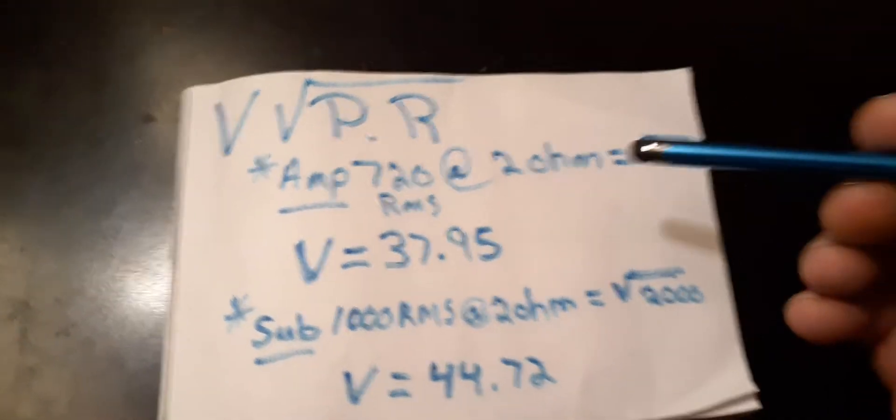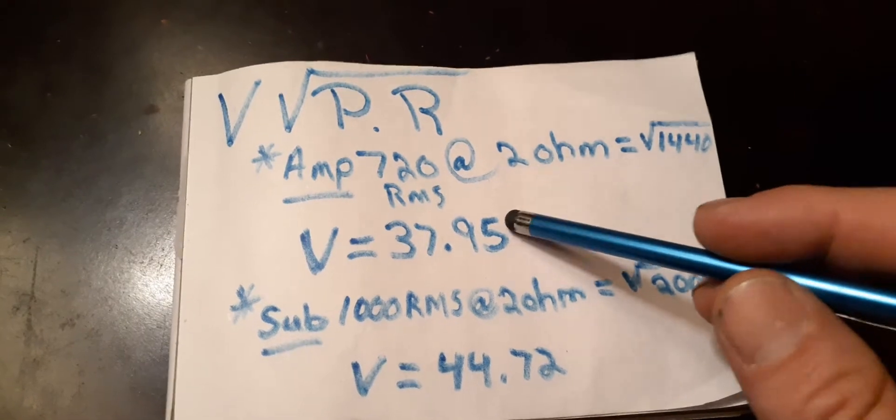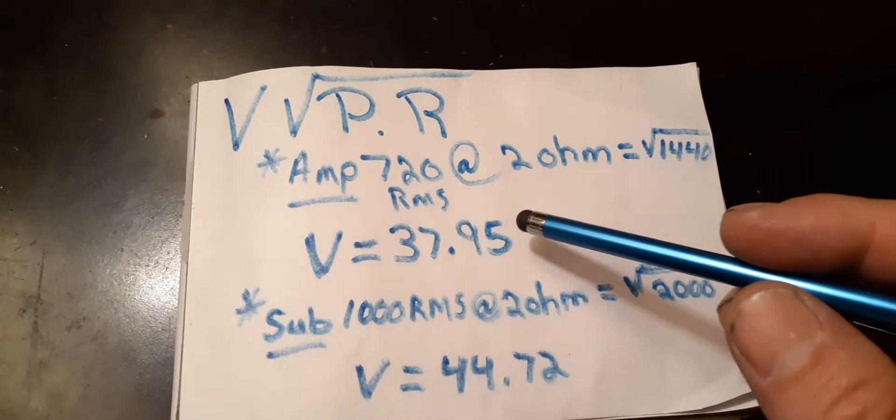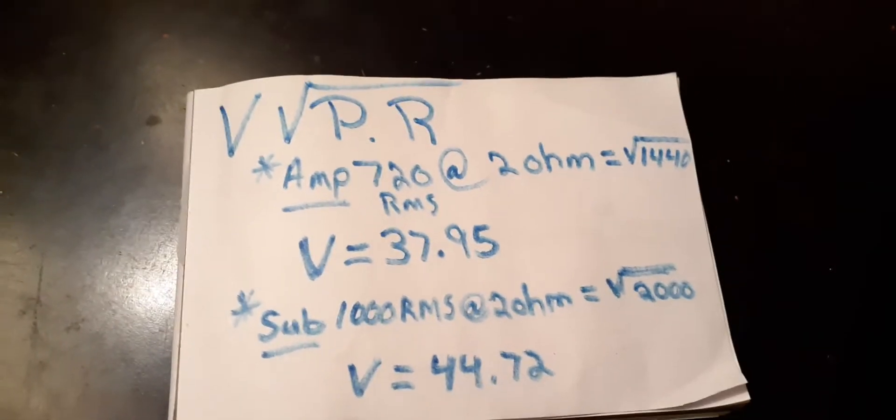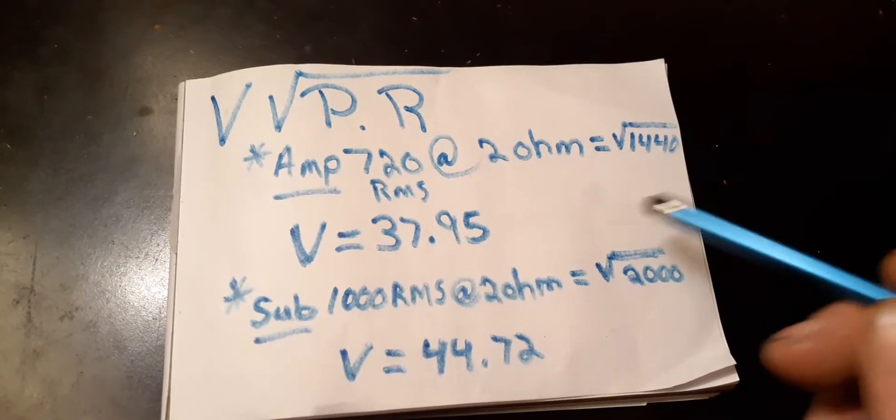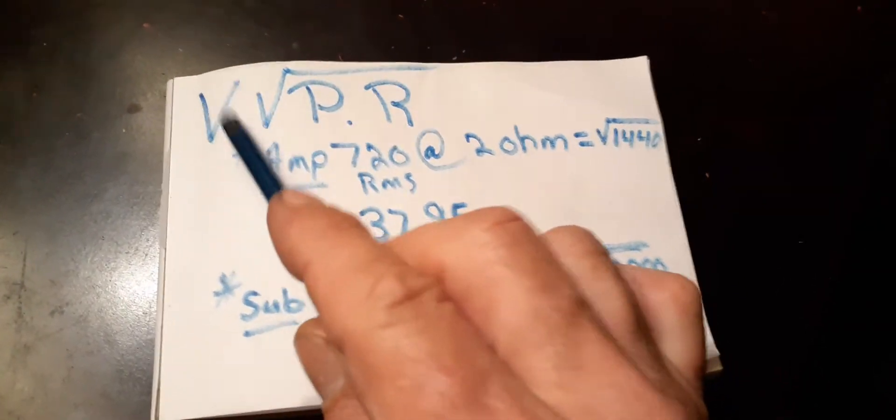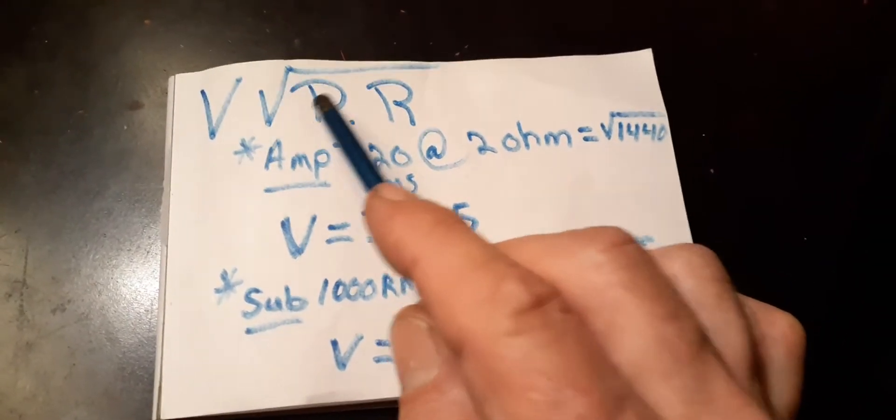Hey guys, I just want to go over real quick how I got the voltage numbers for my amp gain setting. First of all, you want to get your desired voltage number, and you want to get your power times resistance.